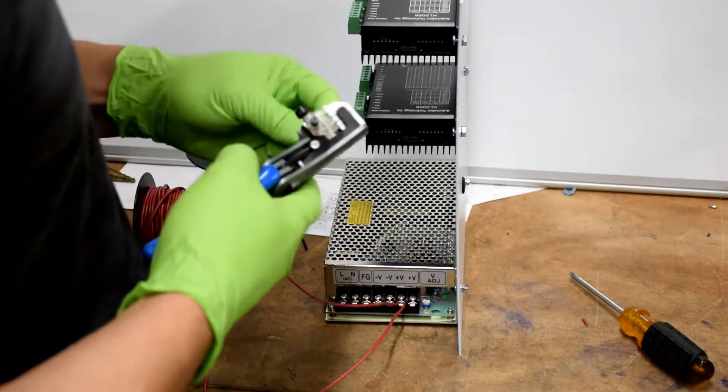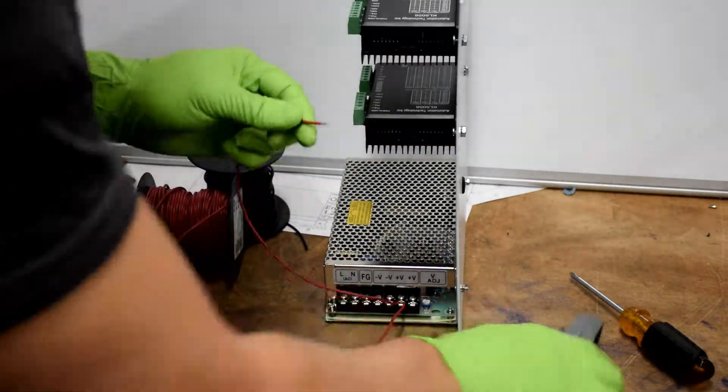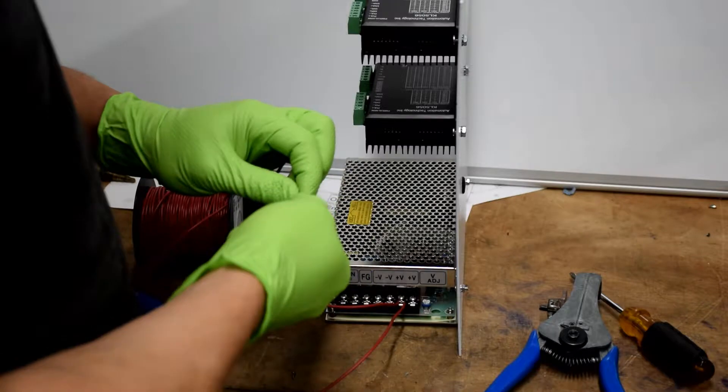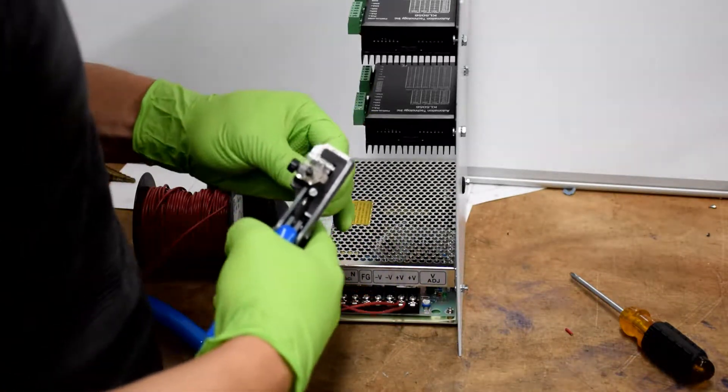After the wires are cut to length, go ahead and strip off the other ends. This is stranded wire, so it's helpful to give the copper a little twist to make it all one unit, so you don't have wires sticking out.